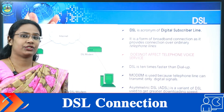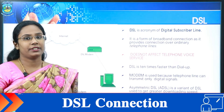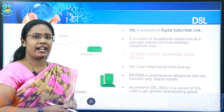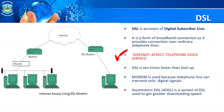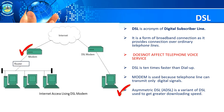The next type of internet connection is DSL, that is Digital Subscriber Line. It is a form of broadband connection as it uses the ordinary telephone line for connectivity. It doesn't affect the telephone voice service, meaning the voice service and internet service can work simultaneously. It is 10 times faster than the dial-up connection. A modem is used here because telephone lines can transmit only analog signals. The variant of DSL commonly used is ADSL, because it provides greater downloading speed.